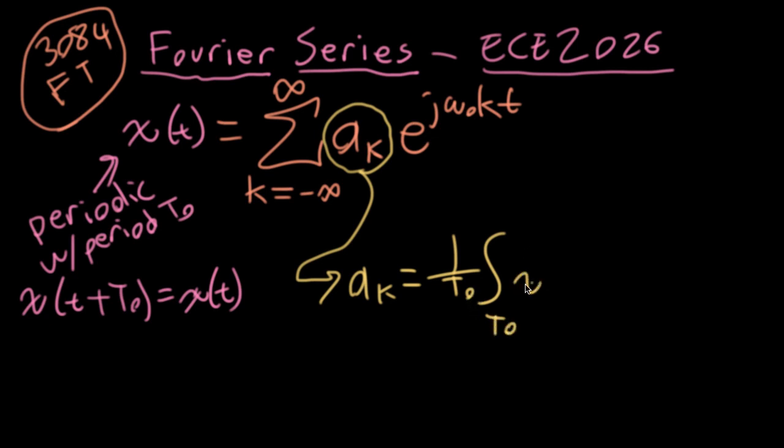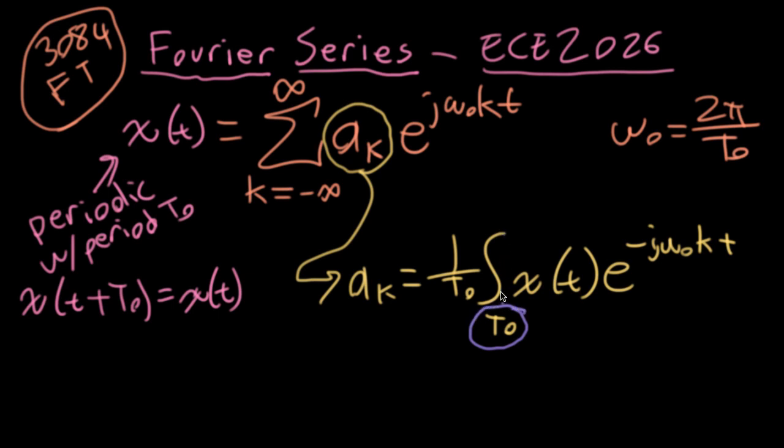We will integrate our function x of t times e to the minus j omega nought kt, where omega nought is the fundamental frequency in terms of radians per second. That's given by 2 pi over t nought. And the basic difference between these formulas, besides this being an integral and this being a sum, is the sign in the exponent that's needed to get the math to work out. The t nought in the subscript here indicates that I can integrate over any period and get the same answer for ak. Usually, x of t will be specified in a particular way, such that it'll be pretty obvious which period you want to use in order to try to get your answer.